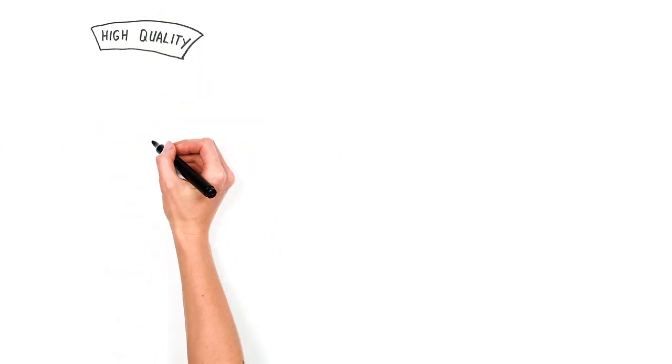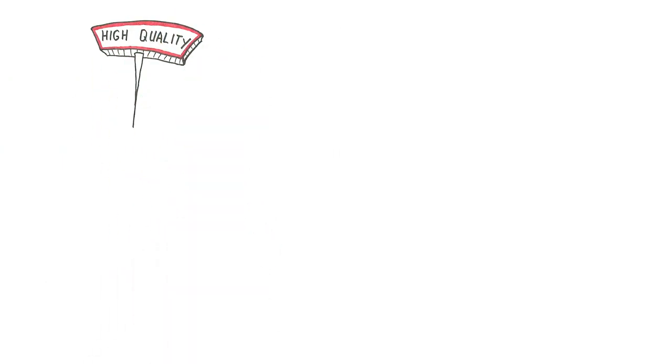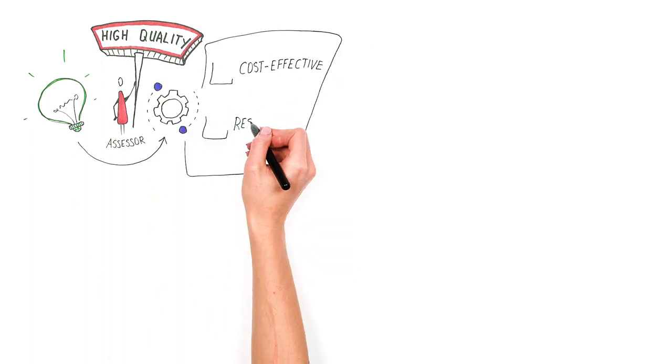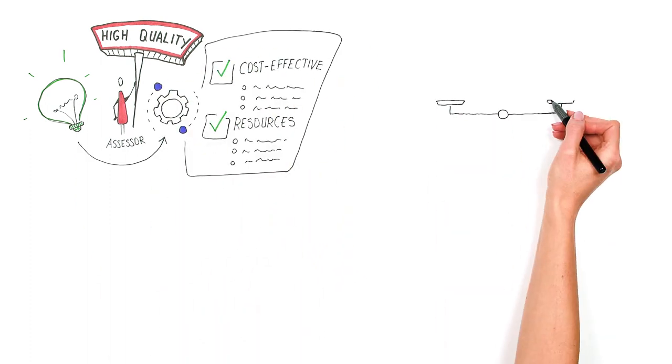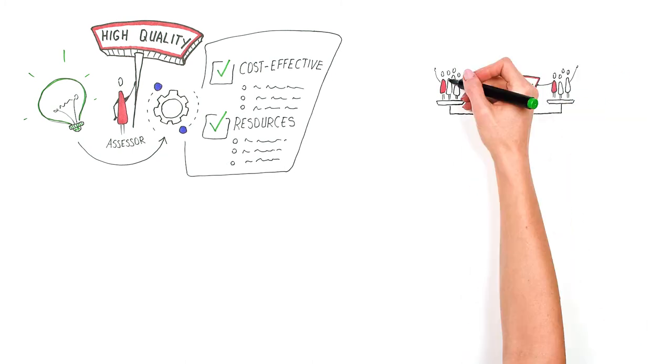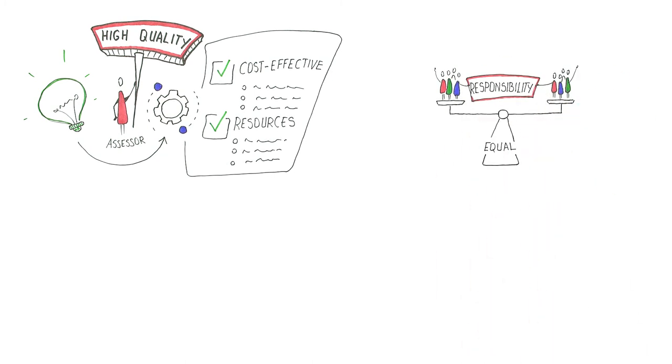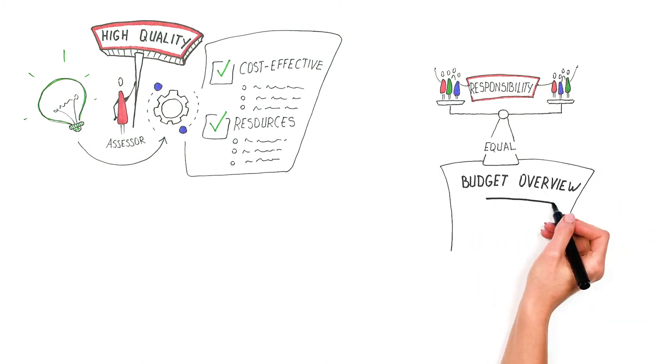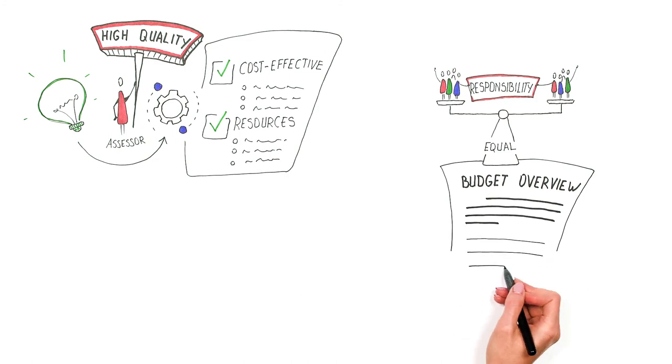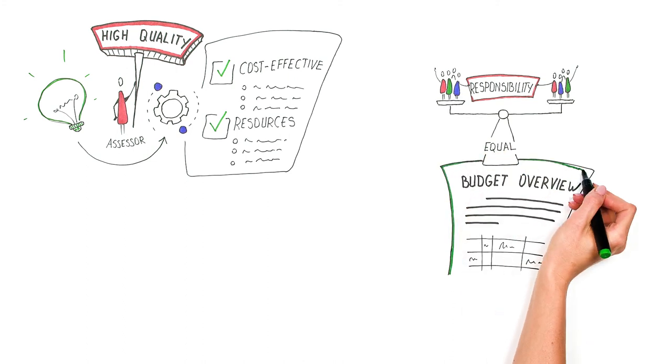To ensure the quality of implementation, assessors will examine the extent to which the project is cost effective and provides appropriate resources to each activity. All partnerships in the partnership are equal and have a shared responsibility, which should reflect in the budget overview. Of course, amounts will be different for all partners, but there should be a balance. You can check this at the end of the financial part of your application where it states in the overview which partner gets which amount.